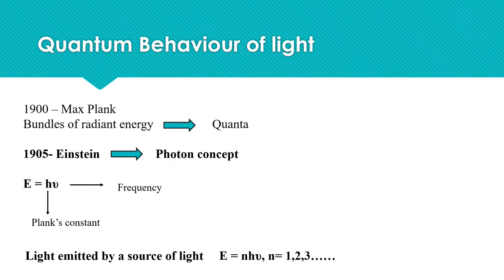In 1900, Max Planck proposed that light consists of discrete bundles of energy. The amount of energy of each bundle is hν. These bundles of radiant energy are called quanta.